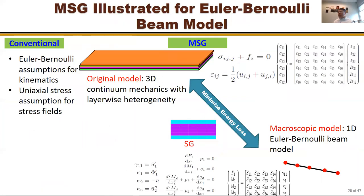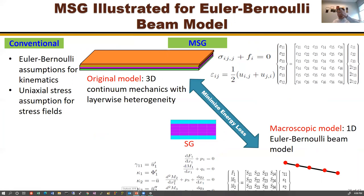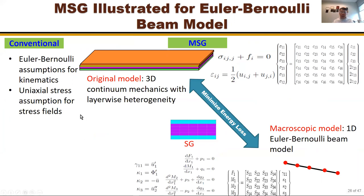Similarly, for constructing an Euler-Bernoulli beam model for a composite structure, the traditional approach uses Euler-Bernoulli assumptions (cross-section remains plane, normal, and rigid) plus a uniaxial stress assumption. With MSG, you only specify the original model and the model you want, take the cross-section as the structure gene, minimize the energy loss, and automatically construct the model — without Euler-Bernoulli assumptions or uniaxial stress assumptions.